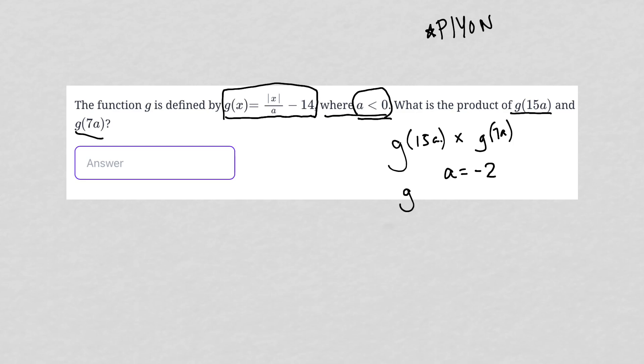Using a is negative 2, that would mean I'm looking for g of 15 times a, which makes it g of negative 30 times g of negative 14. Let's go with that.